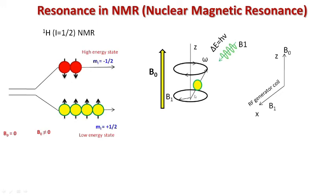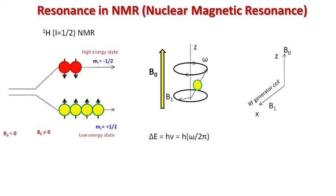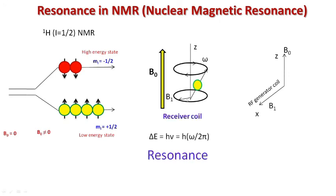When this oscillating magnetic field B1 is applied perpendicular to the z-axis, a torque starts acting on the nucleus, pulling it away from the z-direction. The moment the oscillating frequency of the secondary magnetic field B1 is exactly equal to the precessional frequency of the nucleus — expressed as hν = hω/2π — the nuclei absorb the radiation and excite to the high energy state. This situation is called resonance.